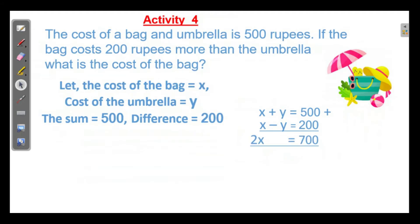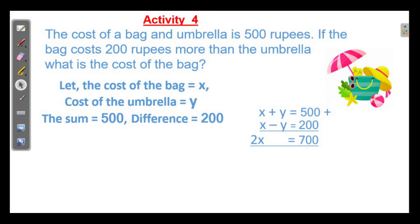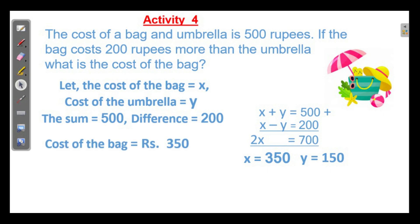The last activity: the cost of a bag and umbrella is 500 rupees. If the bag costs 200 rupees more than the umbrella, the difference is 200. What is the cost of the bag? x plus y equals 500 and x minus y equals 200. So 2x equals 700, and x equals half of 700, which is 350. Then 350 plus 150 is 500. So the cost of the bag is 350 rupees.